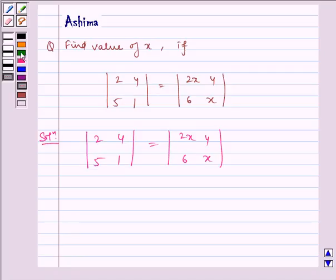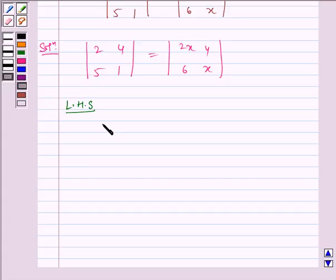First consider the determinant on the left hand side, that is |2 4; 5 1|, which is equal to 2 minus 20, which equals minus 18.